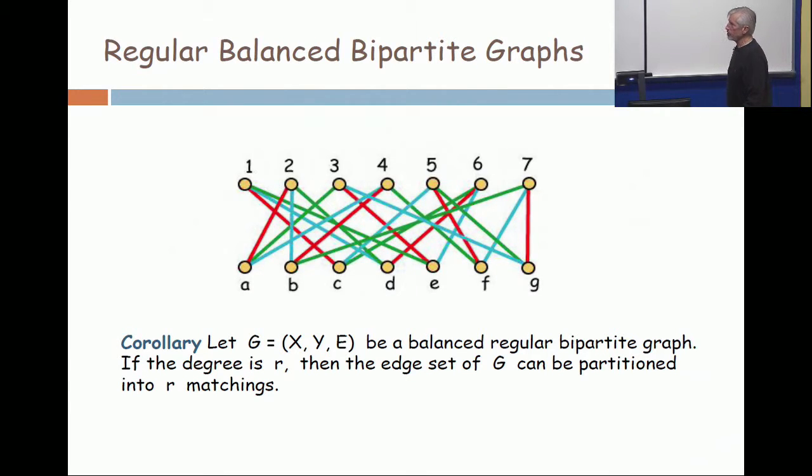So if you look at this picture carefully, you'll see every vertex on both sides is incident with a red edge, a green edge, and a blue edge.